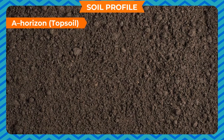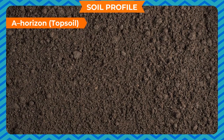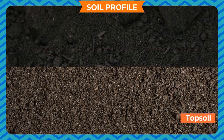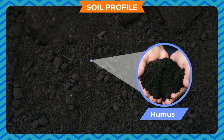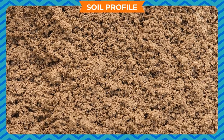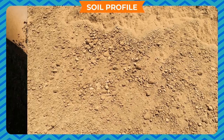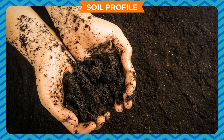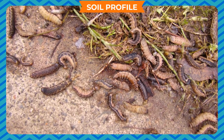A-horizon, Topsoil: The uppermost layer of the earth is known as A-horizon or topsoil. The major content of this section is humus, which makes it generally blackish-brown in color. The topsoil is soft and porous, has good water-retaining capacity, and is a habitat of many tiny organisms.